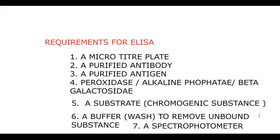We will revisit these requirements when we go through how each is used. To summarize: either antibody or antigen — purified — a microtiter plate, a substrate, a buffer to remove unbound substances, and a spectrophotometer are required. Peroxidase, alkaline phosphatase, or beta-galactosidase are the enzymes we use.